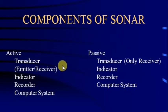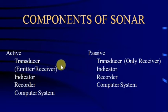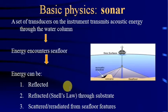There are two types of SONAR: active and passive. Active SONAR has a transducer, emitter, and receiver, while passive SONAR has only a transducer — it only receives sound waves. Active SONAR both emits and receives. The remaining components — indicator, recorder, and computer system — are the same for both types.